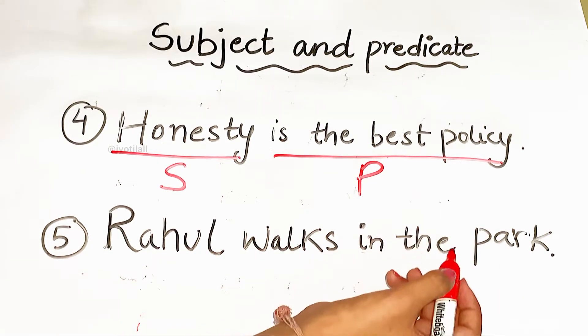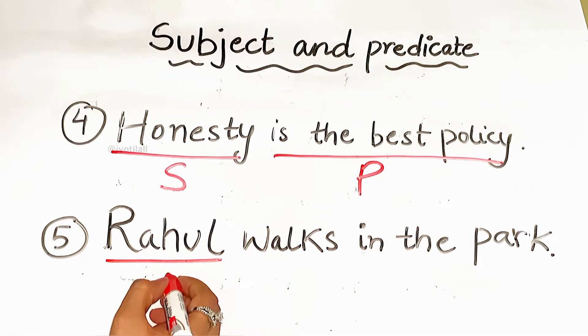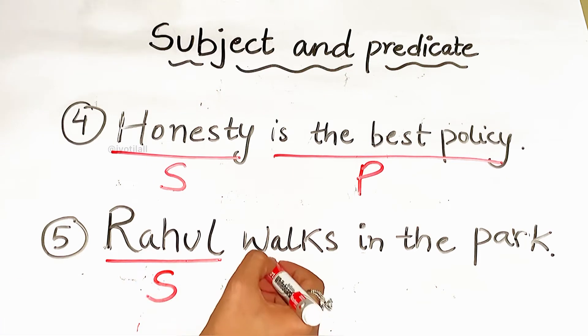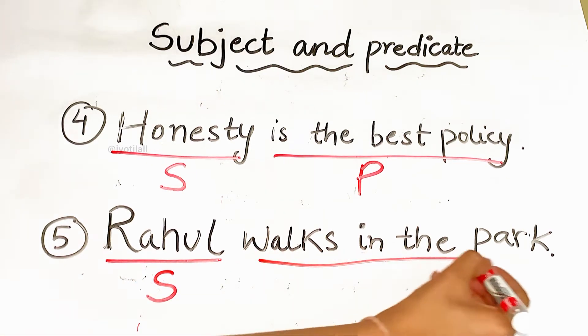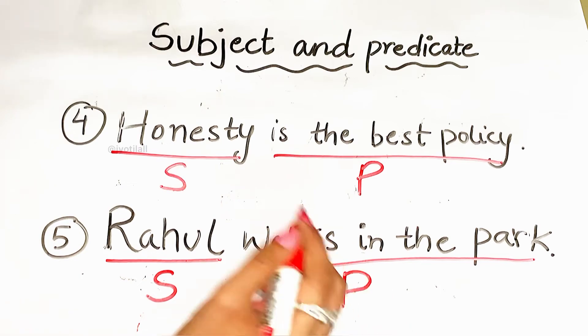Next sentence: 'Rahul walks in the park.' Who walks in the park? Rahul. So 'Rahul' is the subject here, and 'walks in the park' is the predicate.